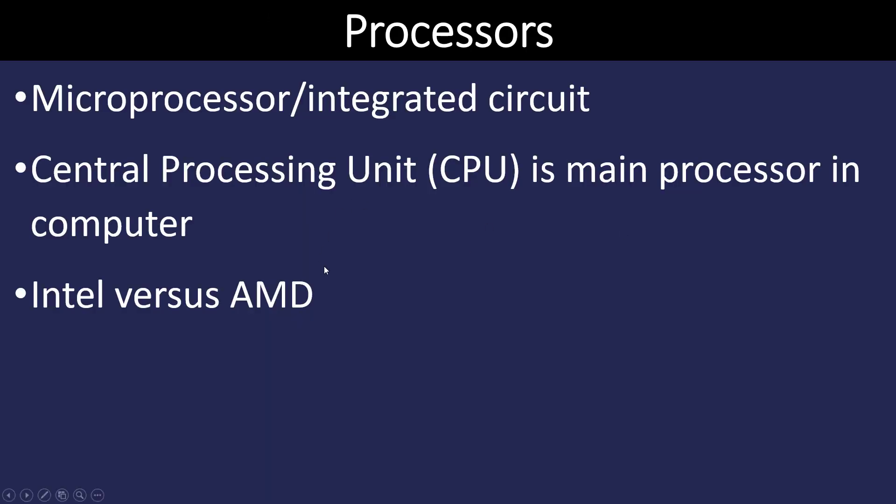Let's talk about the processor in a little more detail. The CPU really is something called an integrated circuit, which means it has literally millions of transistors on it, all of which are connected through some type of very small conductor. These small conductors are measured in microns, which is a very small measurement. Although a computer may have other microprocessors that do work, the CPU is the main processor doing the work. Generally, in computers today, there are two manufacturers: Intel and AMD.